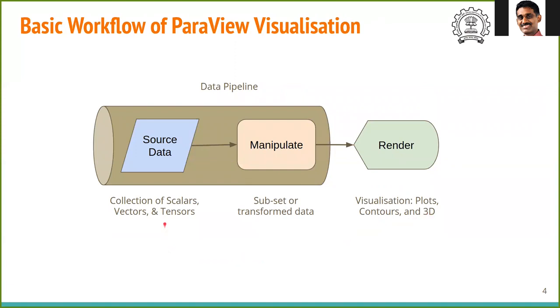It is useful to think of the source data going through a pipeline of processing. The three key words to remember are: what is the source data, how do we manipulate it, and how do we want to render the manipulated data.